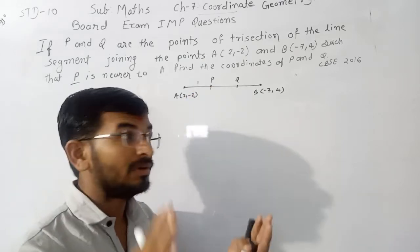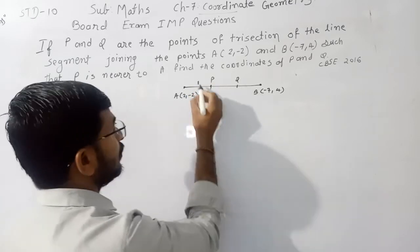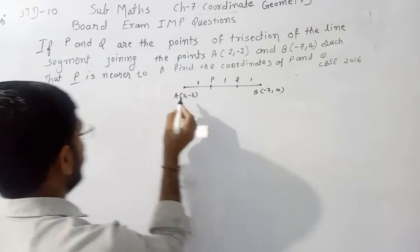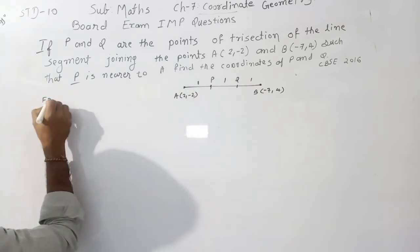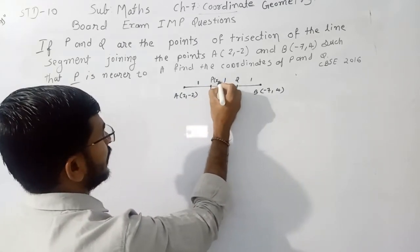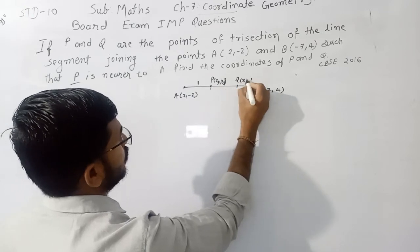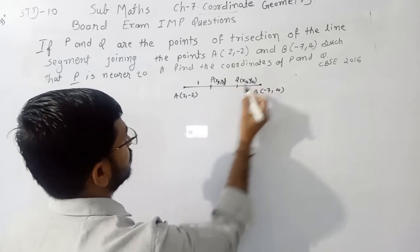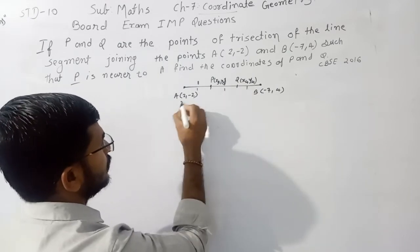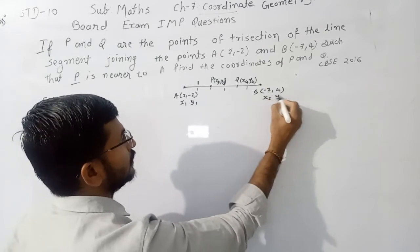Now, what is happening here? Trisection. So it divides P, Q, the line segment 1 ratio 1 ratio 1. Now for point P, first of all we say give the name X3 and Y3. Q's vertices is X4 and Y4, and divide it in 1 ratio 1 ratio 1. Now vertices of A is X1, Y1 and vertices of B is X2, Y2.